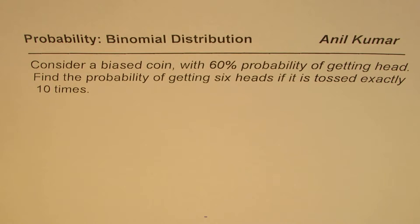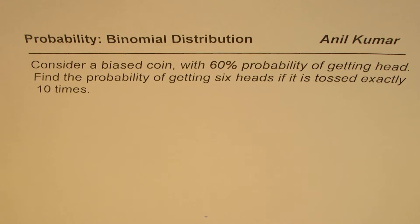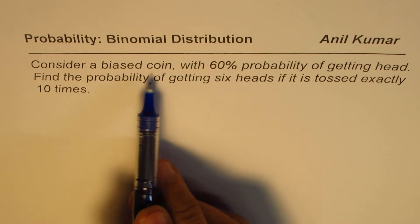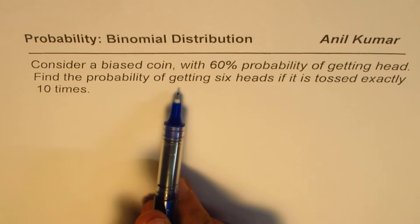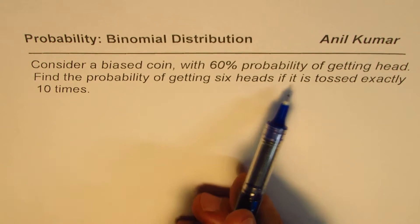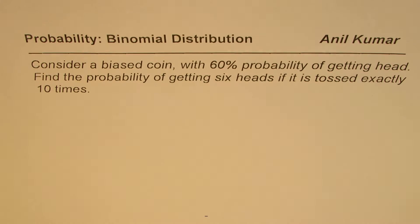I'm Anil Kumar. Here is an application on binomial distribution. The question is: consider a biased coin with 60% probability of getting head. Find the probability of getting 6 heads if it is tossed exactly 10 times.